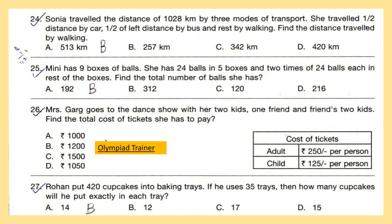Question 26: Mrs. Gurg goes to a dance show with her two kids, one friend, and the friend's two kids. Find the total cost of tickets she has to pay. Cost of tickets: adult rupees 250 per person, child rupees 125 per person.